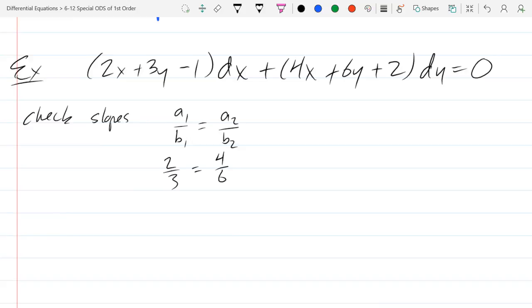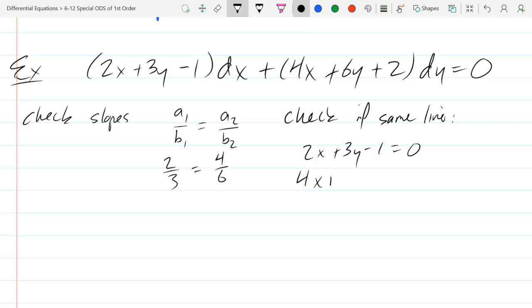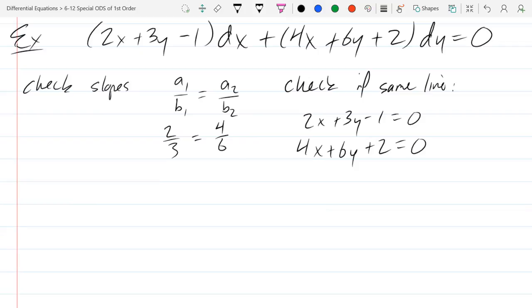Now, they might be the same line, how would I check if they're the same line? So, we'll write our linear system, 2x plus 3y minus 1 equals 0, and the other one, 4x plus 6y plus 2 equals 0. So if they were the same line, what relation would these two equations have? They basically need to be the same equation. So one of them would be a scalar multiple of the other one. So you can see it's almost two times, but the constant's off. So the constant doesn't follow that two times pattern.